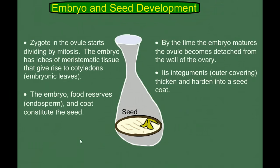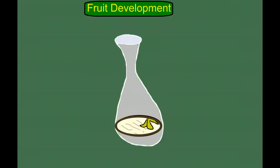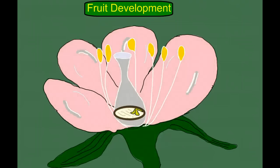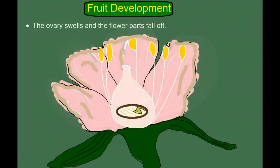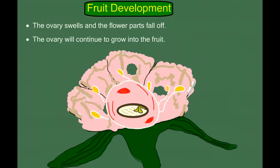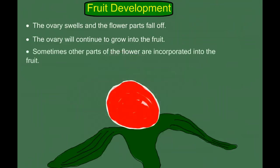These are angiosperms — angiosperm means covered seed. So here's a seed, and it's covered by fruit. So now we have to have fruit development. The ovary of the flower is going to start to swell, and the petals start to break down and fall away. The ovary continues to grow and the ovary becomes the fruit. Ovules are inside ovaries; seeds are inside fruit. If the ovule becomes a seed, the ovary becomes the fruit. Sometimes some of the other parts of the flower are incorporated into the fruit.